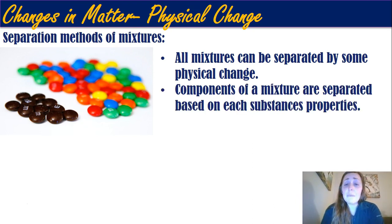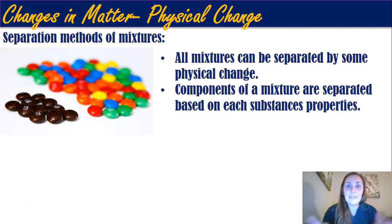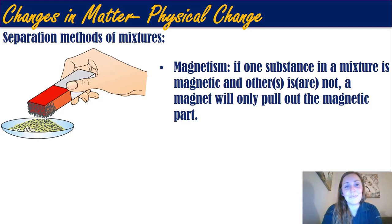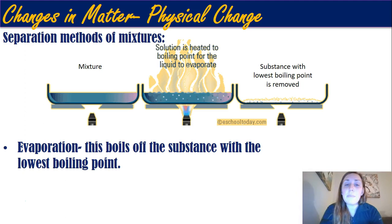Components of a mixture are separated based on each of their separate properties. In this picture you can see a sample of M&Ms where the brown M&Ms were taken out — you can see the physical property of their color and remove them based on that. Another technique is magnetism: if one substance in your mixture is magnetic while the others aren't, you just hold a magnet over it and it pulls out the magnetic pieces, without changing any chemical composition because the things aren't bonded together.